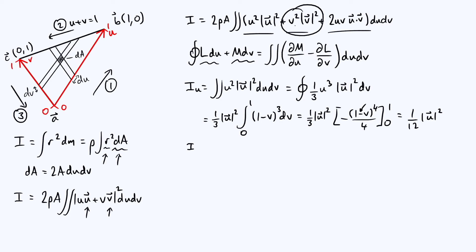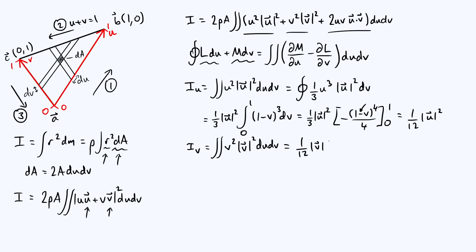Using an identical method for the second contribution — which I'll define as I_v, the integral of v squared times the modulus of the v vector squared du dv — you go through exactly the same sequence of steps. The only difference at the end is that you get one-twelfth |v|² instead of one-twelfth |u|².